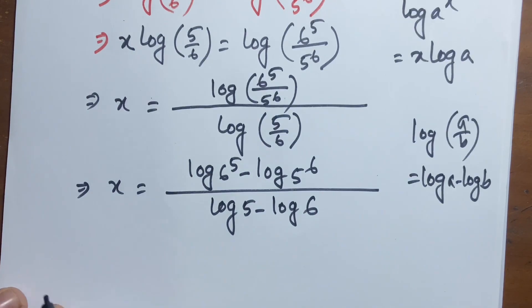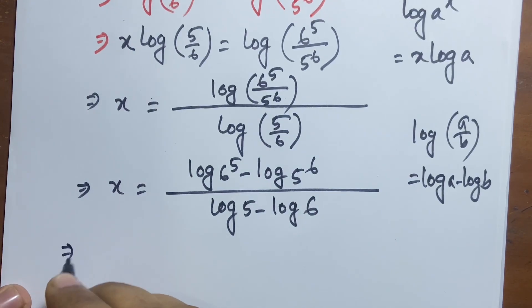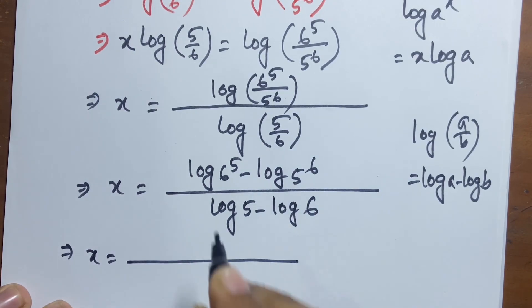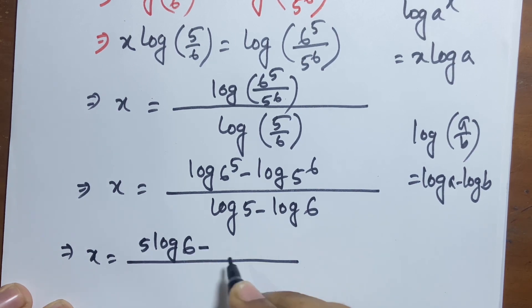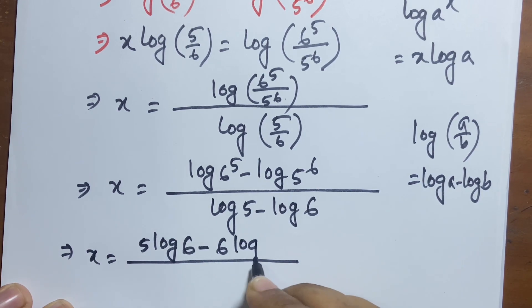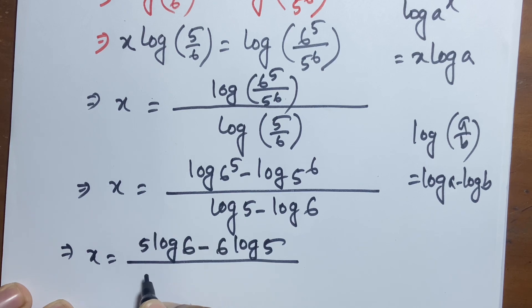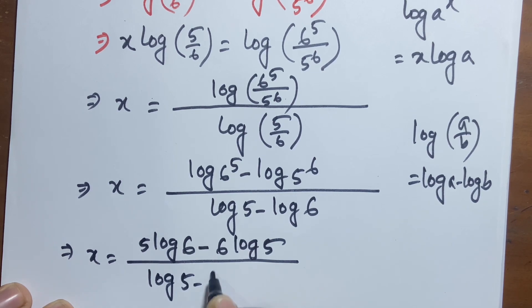And the denominator is log 5 − log 6. So x = (5·log 6 − 6·log 5) / (log 5 − log 6).